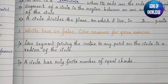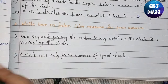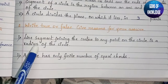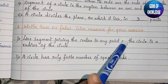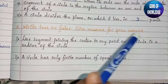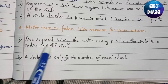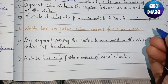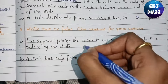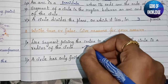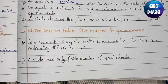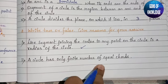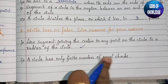Next, question two: write true or false and give reasons. First: the line segment joining the center to any point on the circle is called the radius of the circle — that is true. Second: a circle has only a finite number of equal chords — is this true?